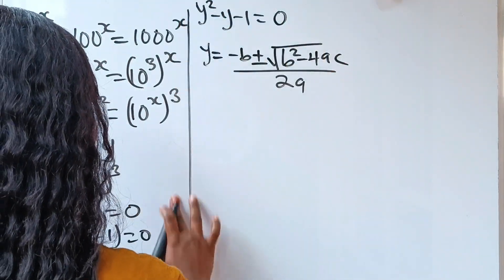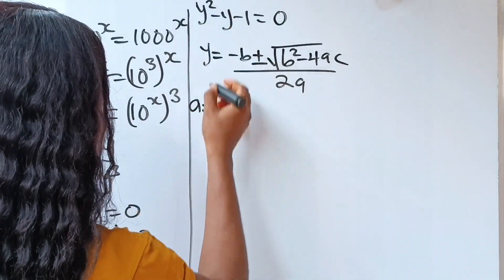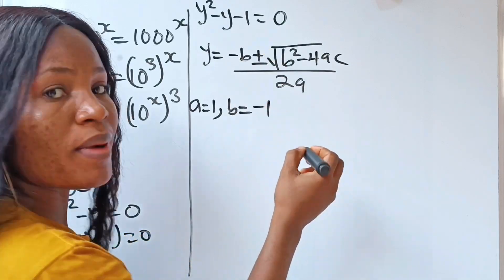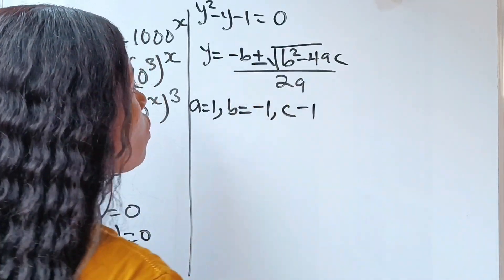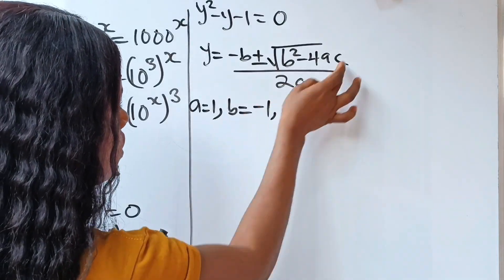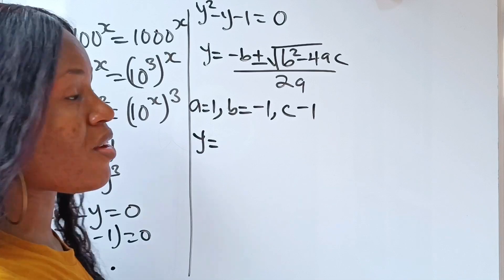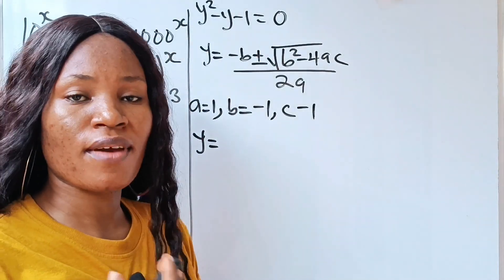Now in this case, I want you to note that our a is the coefficient of y squared which is 1, our b is coefficient of y which is minus 1, and our c is our constant which is also minus 1. So if we should substitute this into this equation, our y is equal to—recall that we are not looking for the value of y, rather we are looking for the value of x.